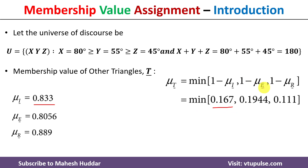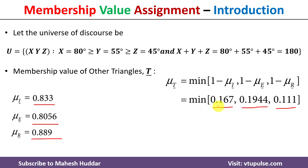The second term is 1 minus 0.8056, which equals 0.1944. The third term is 1 minus 0.889, which equals 0.111. The minimum among these three values is 0.111.